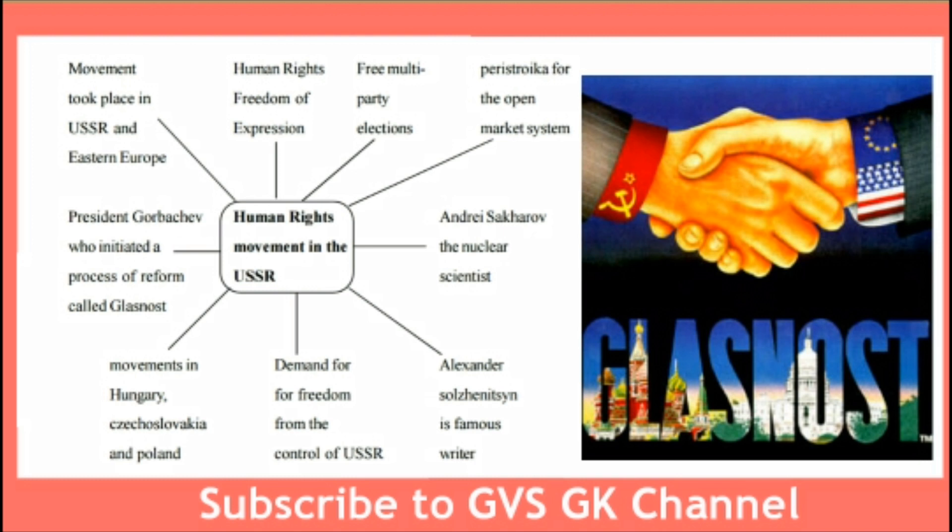The movement took place in USSR and Eastern Europe. An important point from this lesson: President Gorbachev initiated a process of reform called Glasnost. Who introduced Glasnost in the USSR? President Gorbachev.